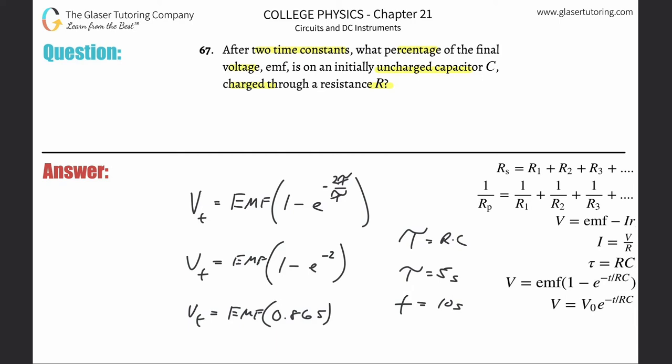Okay, that's basically the idea. So this now works out to be about 86.5%. So it says initially uncharged, right? After two times, what percentage of the final? What percentage? You got to be careful. It says what percentage of the final voltage EMF is on an initially uncharged capacity. So it's 86.5%.